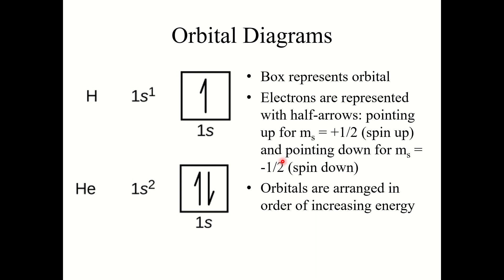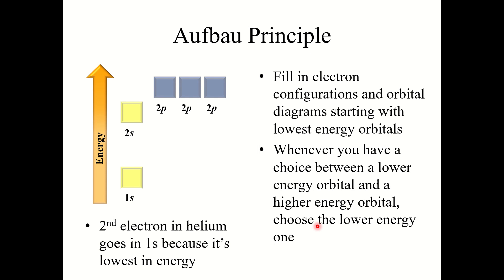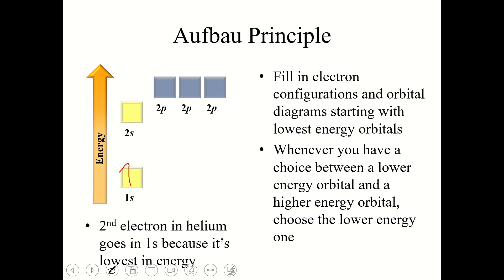Orbitals are arranged in order of increasing energy. This is called the Aufbau principle, which states that electron configurations must be filled starting with the lowest energy orbitals. Whenever you have a choice between a lower energy orbital and a higher energy orbital, choose the lower energy one. That's why hydrogen's electron configuration is 1s1 — its one electron goes in the lowest energy orbital.